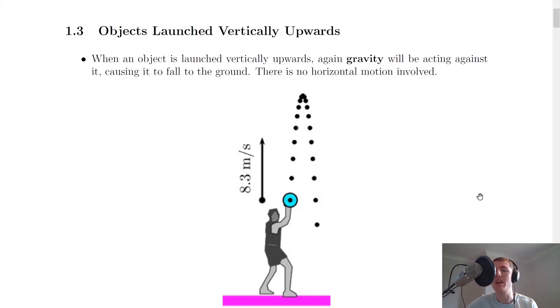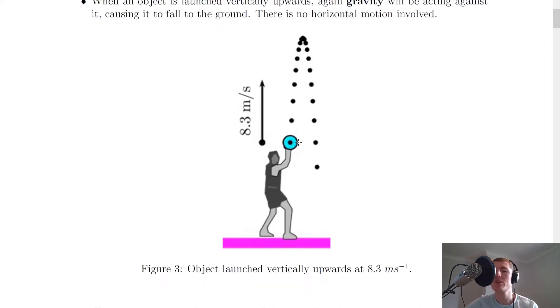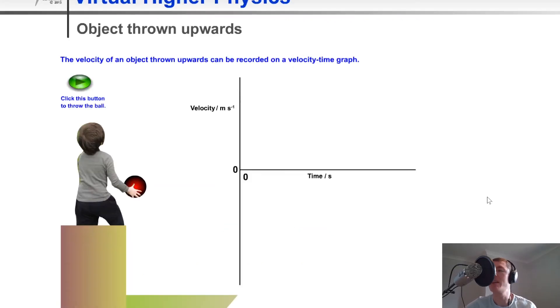This should be common sense that if you take an object and throw it upwards, it's going to only travel vertically and gravity is going to be acting on it. Here's a picture of somebody launching an object vertically upwards at 8.3 meters per second. And just to help you visualize this a bit more, here's an animation. We actually looked at this animation as well when we did motion time graphs.